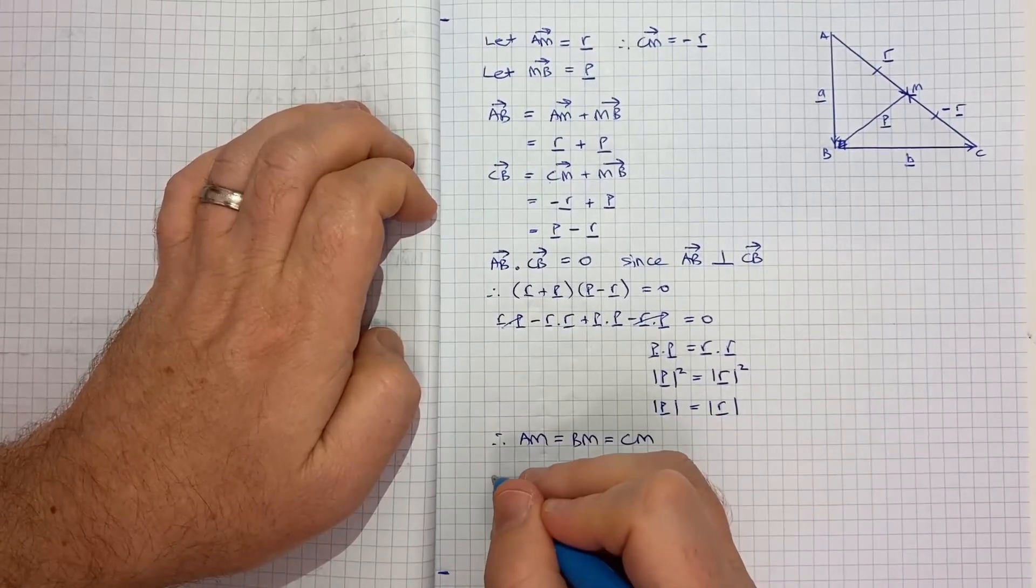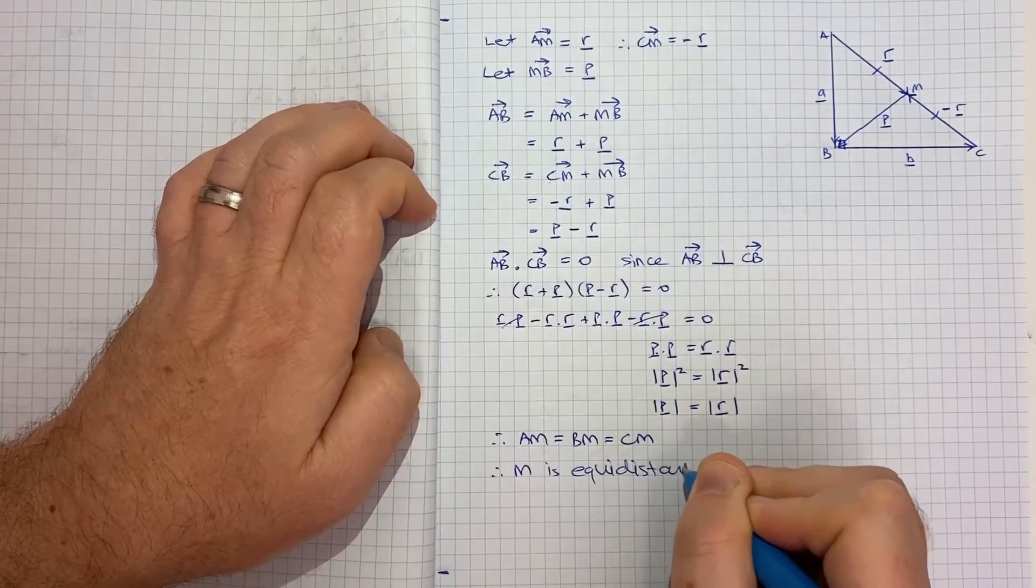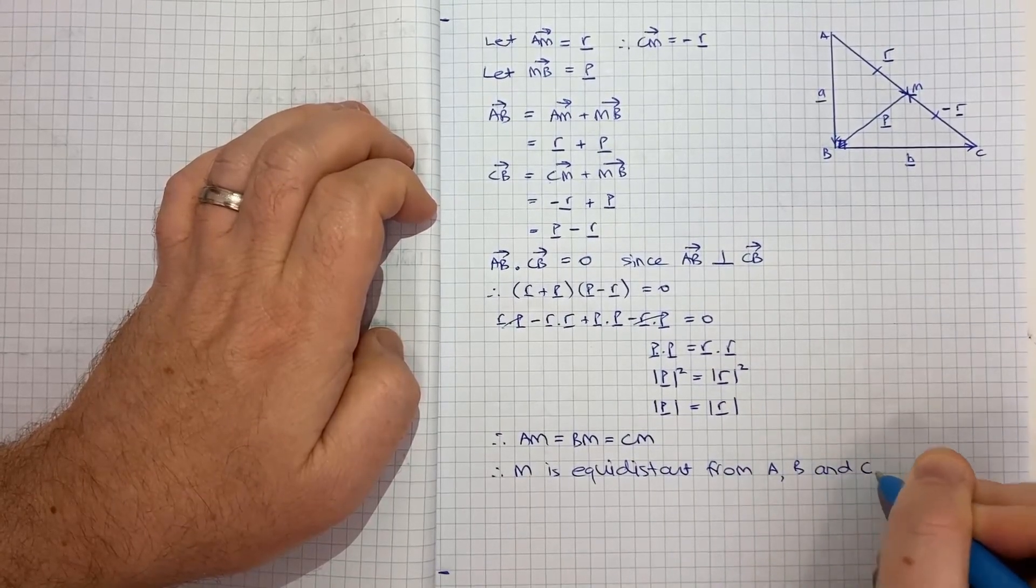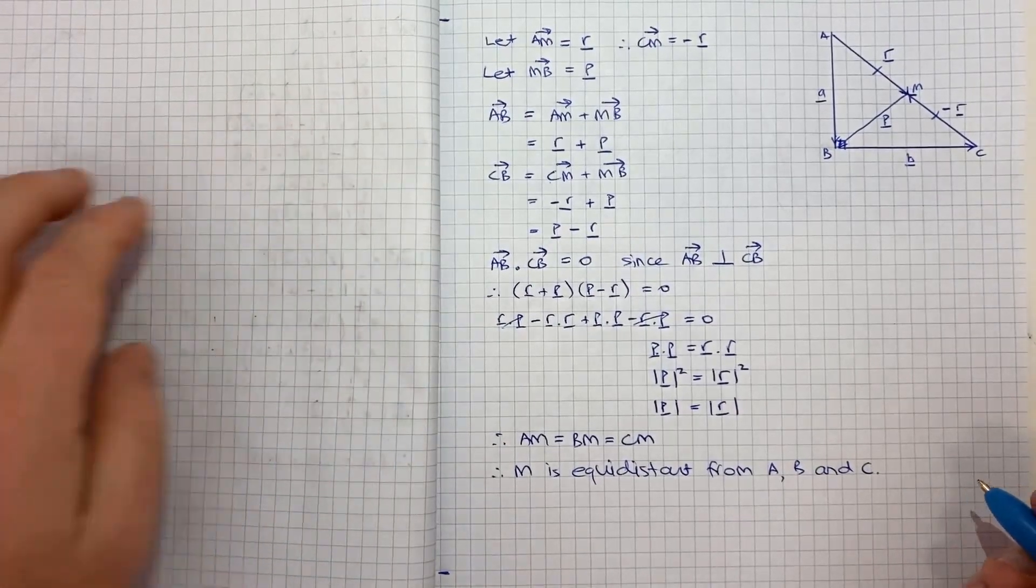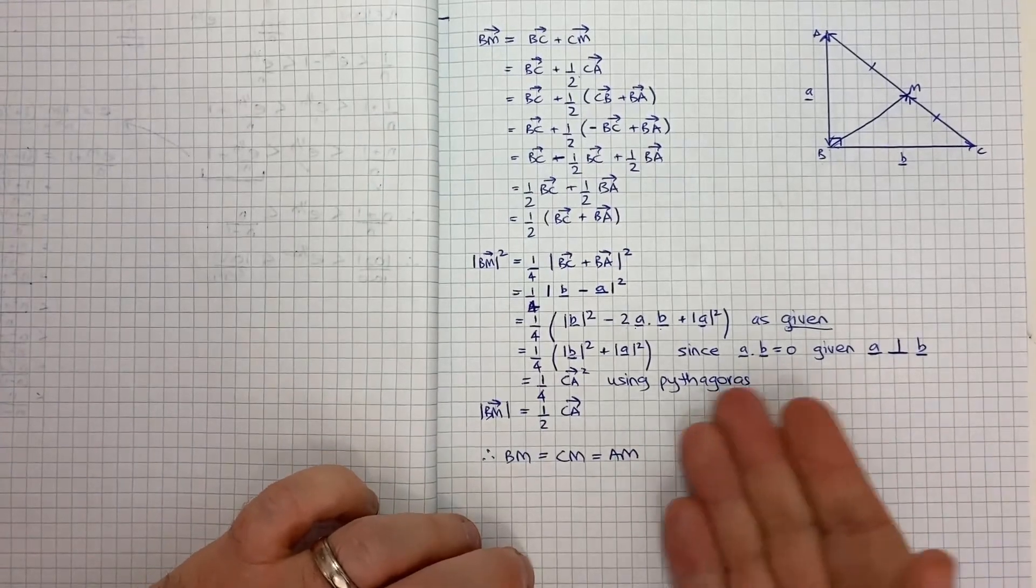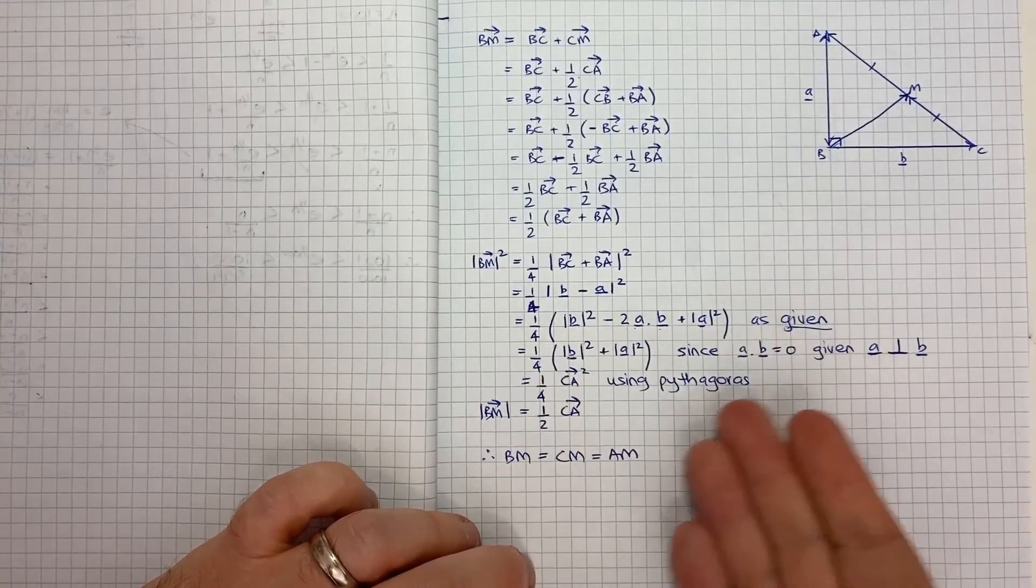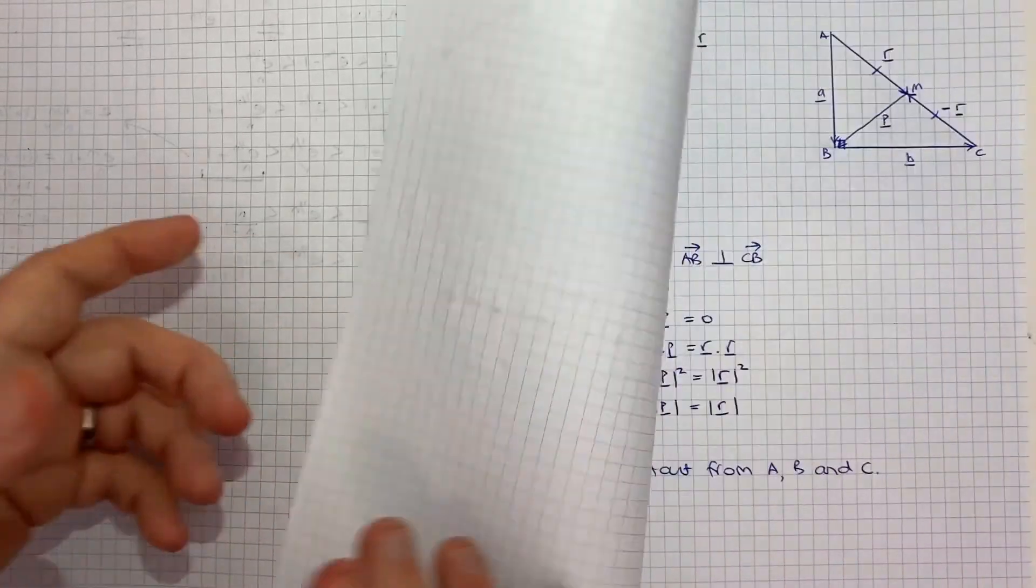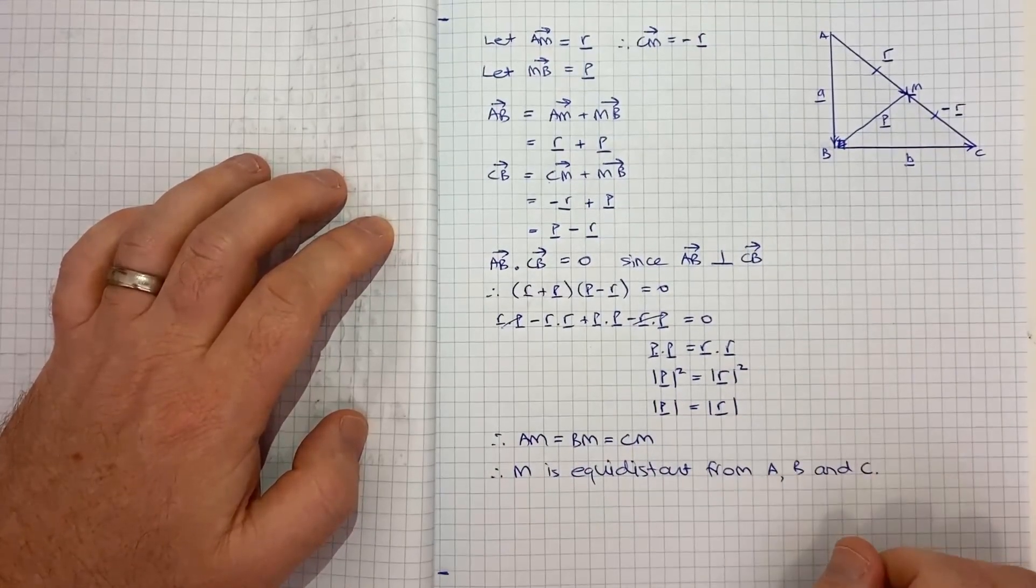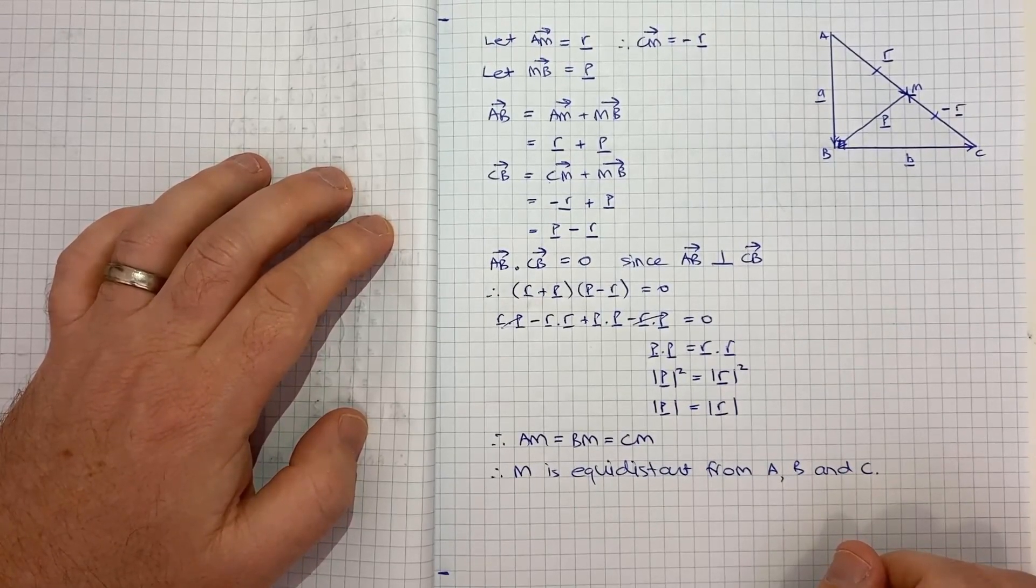And in other words, m is equidistant from a, b, and c, which is what we were asked to prove. So there you have two different ways of thinking about that. The first way, I think, is the way the question, the person who wrote this question wanted you to use. They've given you these results to try and guide you. But there is another way. If, for example, you were asked this question without any of that guidance, you could use this technique as well and get to the right result. So hopefully you found that helpful. And tick, boom.